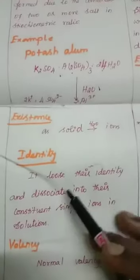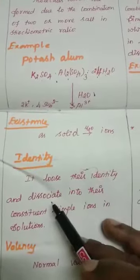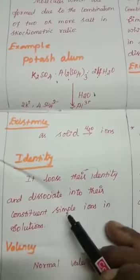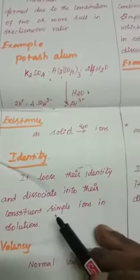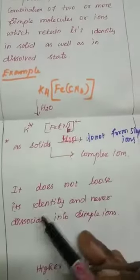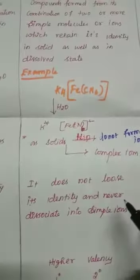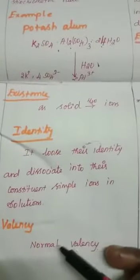These double salts lose their identity and dissociate into their constituent simple ions in solution, but coordination complexes do not lose their identity and never dissociate into simple ions.